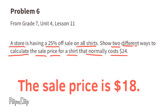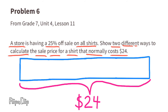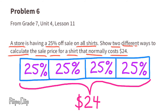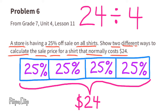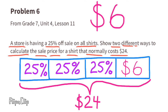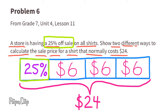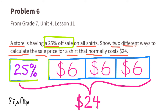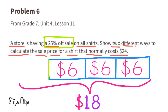Second method using a rectangle representing the $24 price: divide it into four groups of 25%, totaling 100%. Since there are four groups, divide 24 by four, which equals six. Each section is worth six dollars and represents 25%. Since it's 25% off, remove one section of six dollars. The remaining three sections show that the sale price is $18.